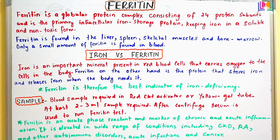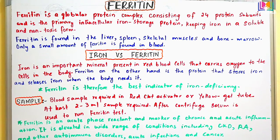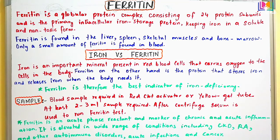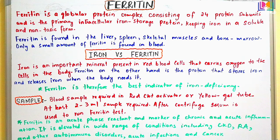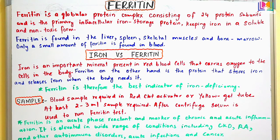The function of ferritin is to store iron and release it when the body needs it. We can say ferritin is the iron storage cell, because it stores iron and when the body needs iron to make red blood cells, ferritin will release that iron. The iron stored in ferritin is in soluble and non-toxic form. Therefore, which is the best indicator for iron deficiency? Ferritin — because if there is not enough ferritin, the available iron becomes toxic and non-soluble and cannot be used to make red blood cells.